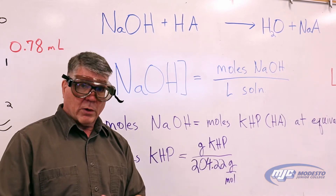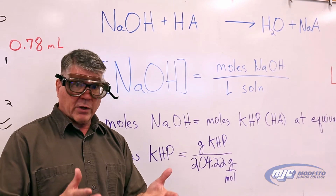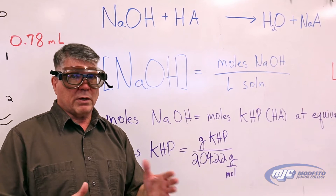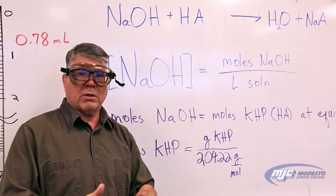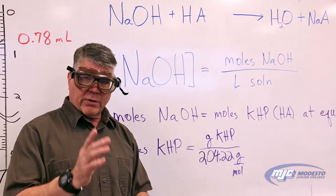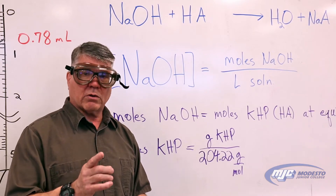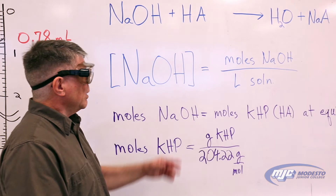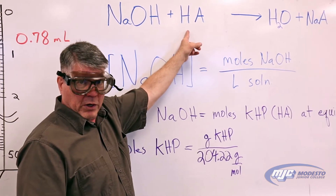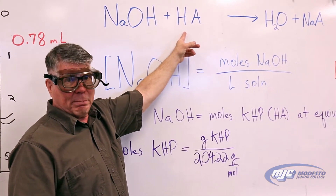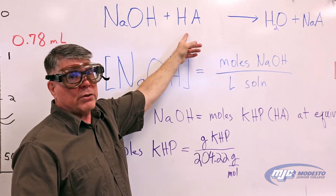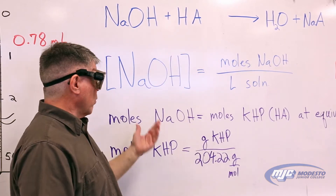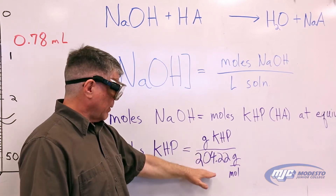In the first part, we're going to make up our stock solution of sodium hydroxide without careful measurements because it doesn't matter — we want an approximate solution. Then in the first part we do what's called standardize that solution. The acid in this equation is called KHP. The only thing you really need to know about it is it's monoprotic and it has a molar mass which I give you in the lab report as well as right here.